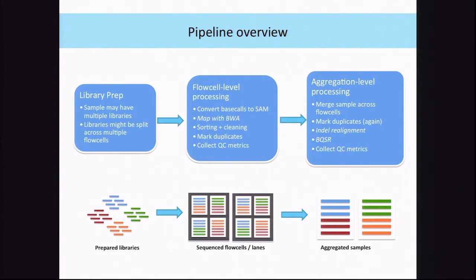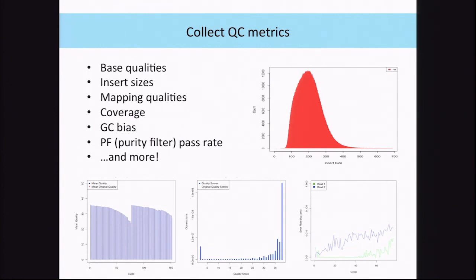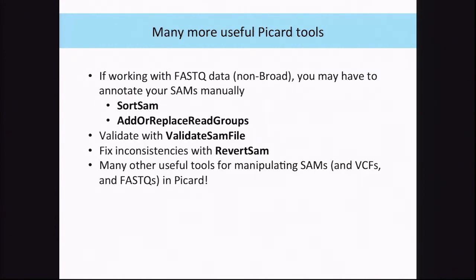At the flow cell level — one SAM file per flow cell lane — we do the base calling to SAM conversion, the mapping, SAM cleaning and validation. We also mark duplicates twice: once at the flow cell level and once at the sample level. We do this because we want QC at the flow cell level that requires knowing the duplication rate, and once we merge multiple flow cells into one SAM file for a sample, we need to mark duplicates again because duplicates could be spread across those multiple flow cells. For QC metrics, we collect base quality score distributions, insert size distributions, mapping quality distributions, coverage, GC bias, filter pass rates, and similar essential metrics.